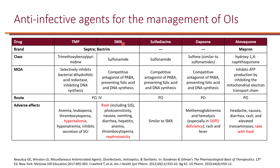For sulfamethoxazole, as a sulfonamide, skin reactions are a major concern. Rash is the most common, and sometimes it can be severe — Stevens-Johnson syndrome can occur, which is rare but potentially fatal. Other reactions include photosensitivity and GI adverse effects such as nausea, vomiting, and diarrhea. Nephrotoxicity is also possible, as sulfonamides can cause kidney damage and trimethoprim artificially inhibits creatinine secretion.